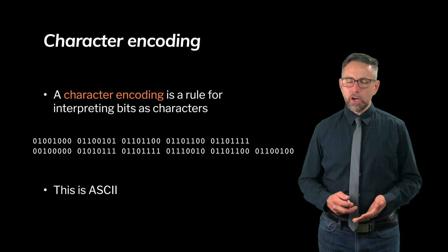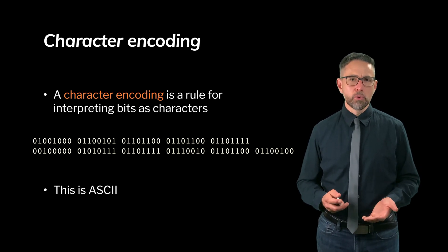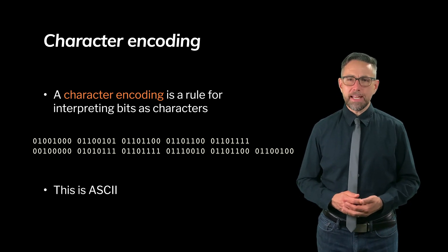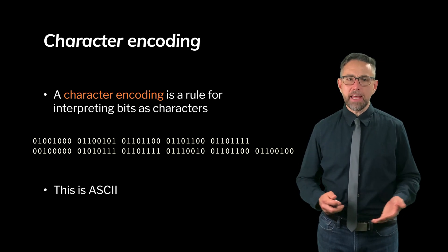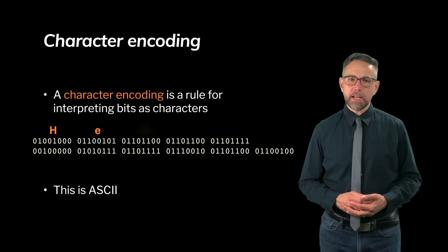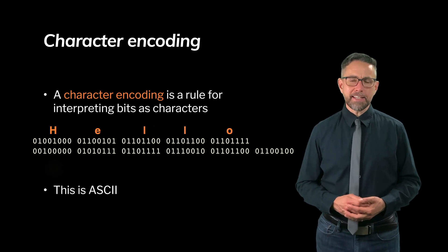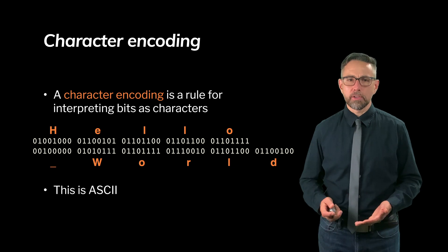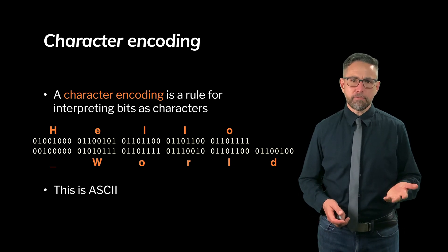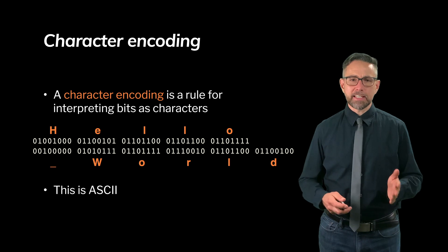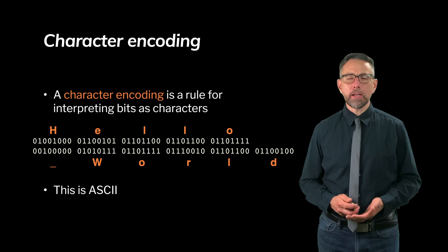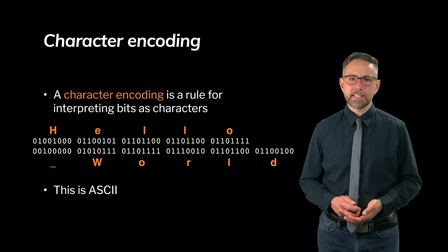A character encoding is a rule for interpreting bits as characters. Here's a sequence of bits in ASCII encoding format, a subset of UTF-8. If you look up the translation, each set of eight bits translates to a letter — H-E-L-L-O space W-O-R-L-D, hello world. There's a different set of bits for capital and lowercase letters, so this has a capital H and capital W. Knowing we're reading these bits in ASCII helps us understand we're seeing the phrase 'hello world.'